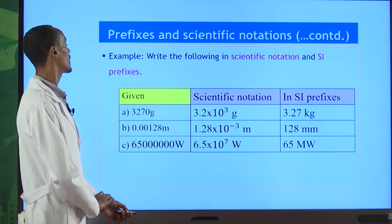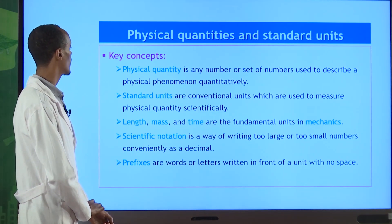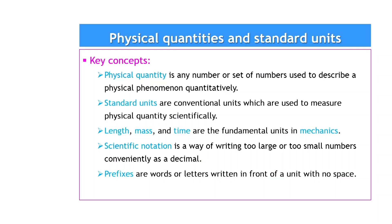Now let's summarize the key points of this lesson. A physical quantity is a number or set of numbers used to describe a certain physical phenomenon quantitatively. Standard units are conventional units used to measure physical quantities. In mechanics we have three basic fundamental units: meter, kilogram, and second, corresponding to the physical quantities length, mass, and time.